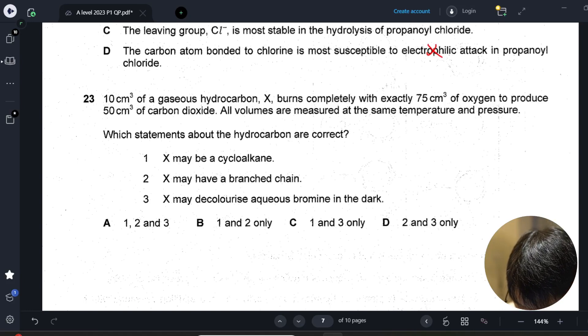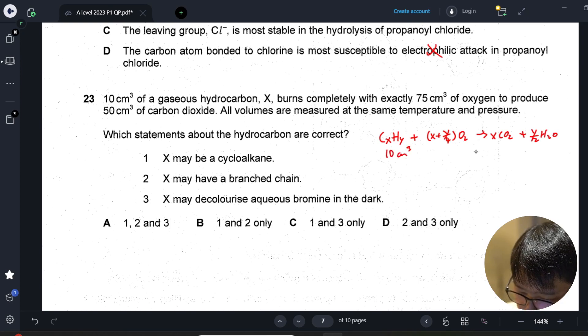Hey, question 23. If you do your combustion equation right, CxHy plus x plus y over 4 O2, you get x CO2 plus y over 2 H2O. Since we know this is 10 cm³ and then...